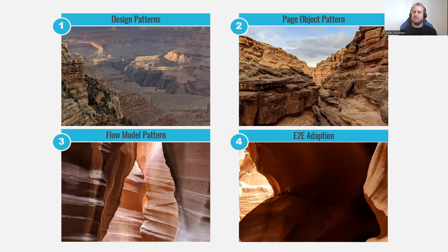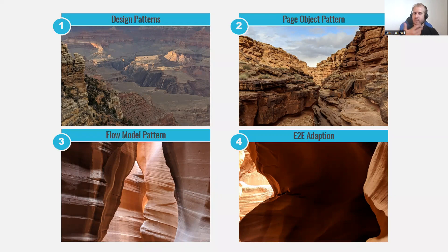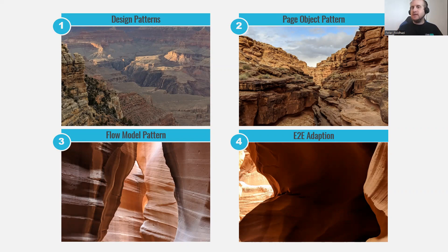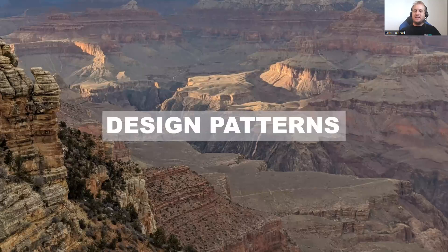Today is all going to be about design patterns. First, I'd like to talk about design patterns in general, then the page object pattern, which is one of the main topics today. Hopefully most or all of you have already heard about it or perhaps even used it in your test automation life. Then we'll cover the flow model pattern, which I invented nine years ago, including how it's different from the page object, how you can incorporate it in end-to-end testing — not just UI, but API, DB testing, log validations, and so on. Let's get started.